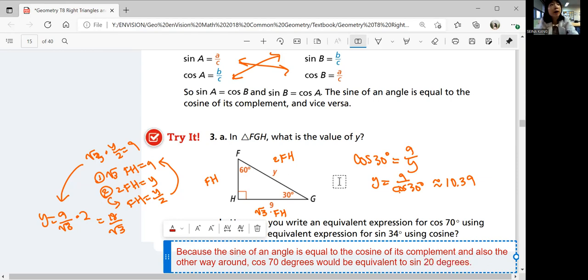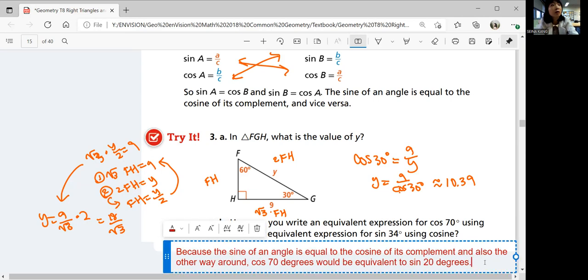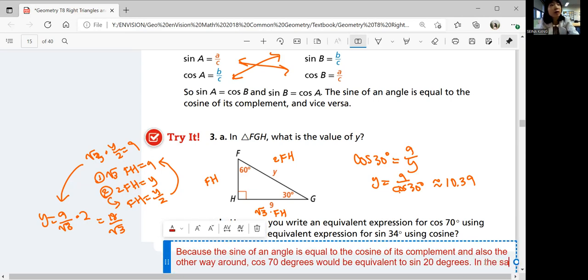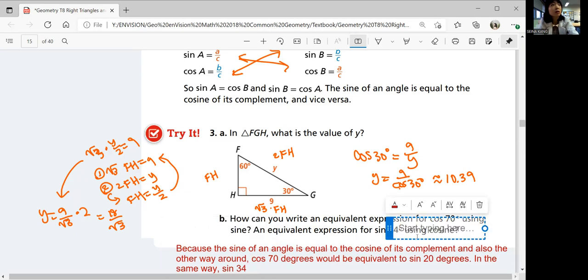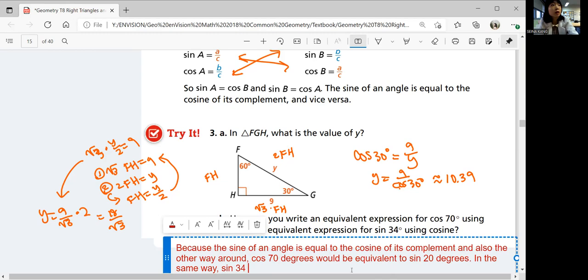What about sine 34? In the same way, sine 34 degrees is equal to cosine. What's the complement of 34 degrees? 56.